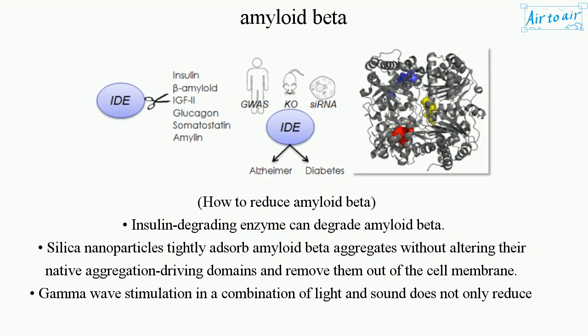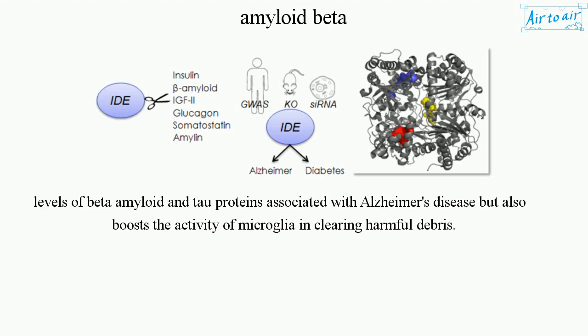To reduce amyloid beta: insulin degrading enzyme can degrade amyloid beta; silica nanoparticles tightly adsorb amyloid beta aggregates without altering their native aggregation driving domains and remove them out of the cell membrane; gamma wave stimulation using a combination of light and sound not only reduces levels of beta amyloid and tau proteins associated with Alzheimer's disease, but also boosts the activity of microglia in clearing harmful debris.